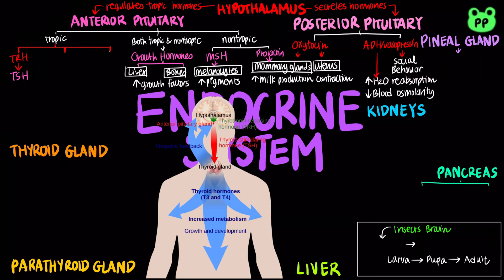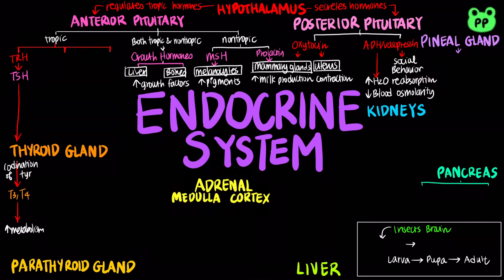TSH then stimulates the thyroid gland to secrete thyroid hormones, which includes T3 or triiodothyronine, and T4 or thyroxine. T3 and T4 then stimulate body tissue to increase cellular metabolism, thus warming up the body. T3 and T4 also inhibit TRH and TSH in a negative feedback loop.